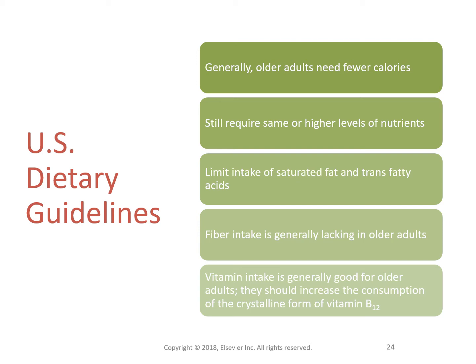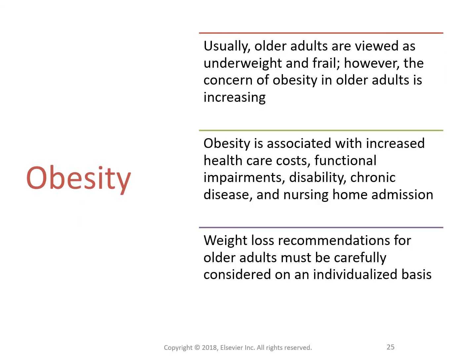In addition to key recommendations, there are recommendations for specific population groups including older adults to help reduce risks related to obesity and other diseases. Vitamin intake is generally good for older adults, and they should increase consumption of the crystalline form of B12 in older age. While older adults are usually viewed as underweight and frail, the concern of obesity in older adults is increasing. Obesity is associated with increased health care costs, functional impairments, disability, chronic disease, and nursing home admissions. Weight loss recommendations for older adults must be carefully considered on an individual basis.